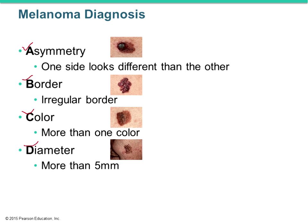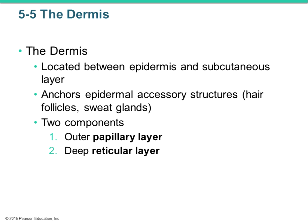Moving on to the dermis — the connective tissue part beneath the epidermis. It's primarily areolar connective tissue but does have some reticular tissue as well. It's not only attached to the epidermis but also anchors all those accessory structures — blood vessels, hair follicles, sweat glands. You'll also see a variety of cells like blood cells that migrate out of the bloodstream and into the connective tissue.